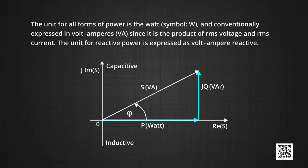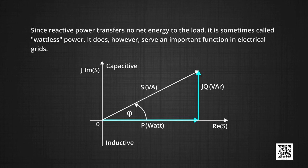The unit for all forms of power is the watt (W), but apparent power is conventionally expressed in volt-amperes (VA), since it is the product of RMS voltage and RMS current. The unit of reactive power is expressed as volt-ampere reactive (VAR). Since reactive power transfers no net energy to the load, it is sometimes called wattless power. It does, however, serve an important function in electrical grids where power is transferred from one station to another.